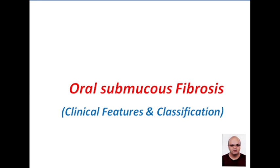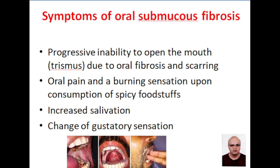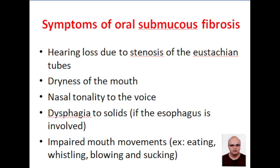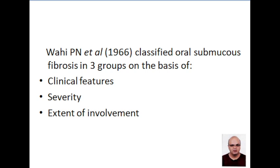Clinical features and classification of oral submucous fibrosis. The symptoms include progressive inability to open the mouth with oral fibrosis and scarring. Sometimes oral pain is seen, along with burning sensation upon consumption of spicy foodstuffs. Increased salivation, change of gustatory sensation, hearing loss, dryness of the mouth, nasal tonality to the voice, dysphagia to solids, and impaired mouth movements are important symptoms.